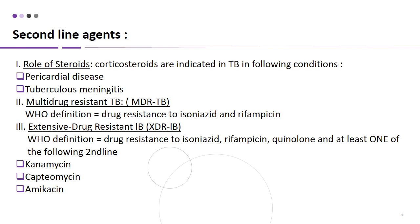In pericardial TB or tuberculous meningitis, steroids should be added along with anti-tuberculous drugs. Multi-drug resistant TB is TB resistant to isoniazid and rifampicin. XDR-TB (extensively drug-resistant TB) is resistant to isoniazid and rifampicin, plus a quinolone from the second-line agents, and at least one of the three injectable second-line agents: kanamycin, capreomycin, and amikacin.